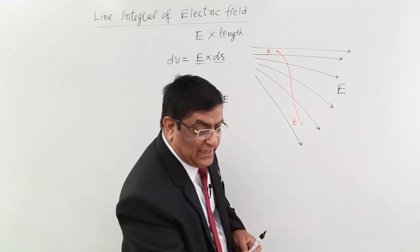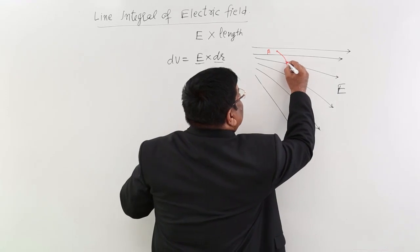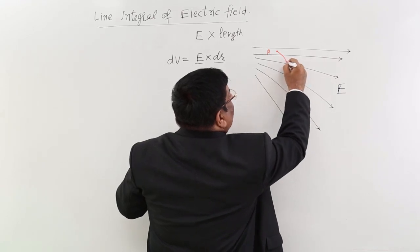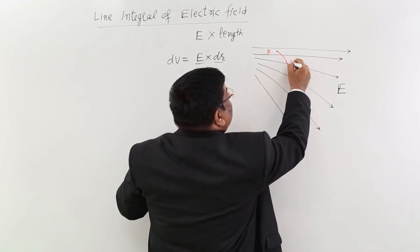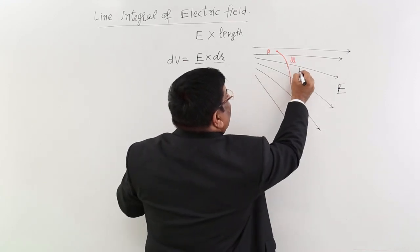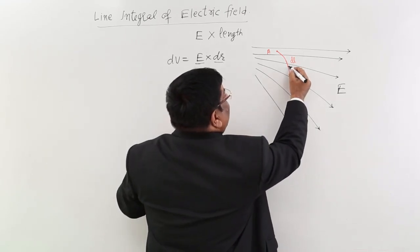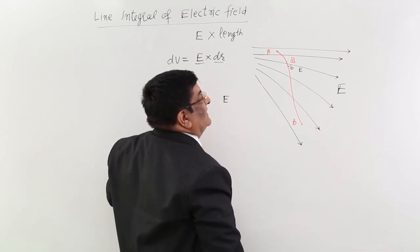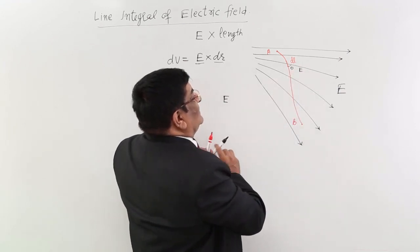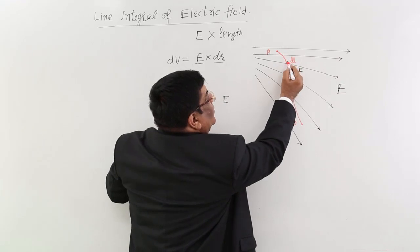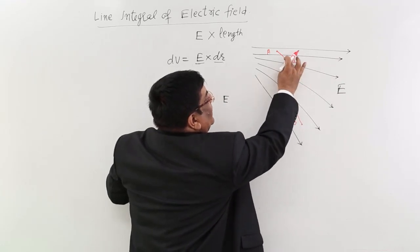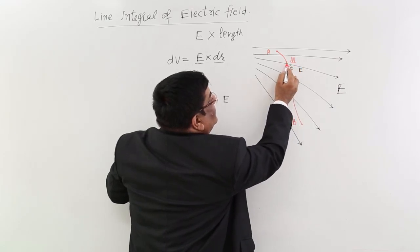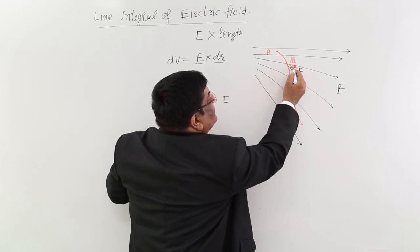At any given point, we take a very small length element dl. At this point, dl and the electric field make a certain angle theta. So which component of dl is along E? The answer is dl cos θ. If the path element is dl, then the component along E is dl cos θ.